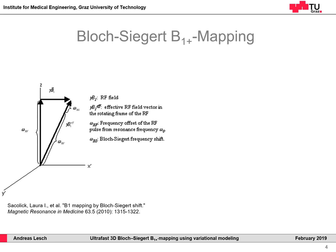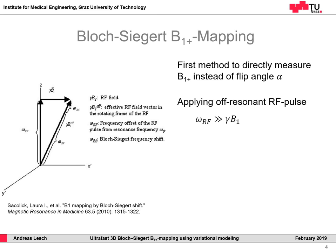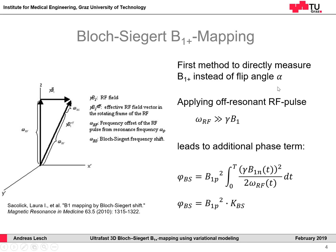For this work we chose the method of Bloch-Siegert, because it is already quite fast and it was the first method able to directly measure the B1 field instead of the flip angle alpha. The method was presented by Sacolick et al. in 2010. The main idea is to apply an off-resonant RF field where the resonance offset is much bigger than gamma times B1. If this is done, a certain shift in resonance frequency can be observed. If such a pulse is applied over a certain time, the underlying signal is affected by an additional phase term, the so-called Bloch-Siegert phase.